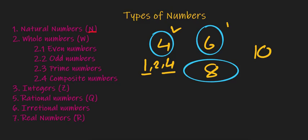6 is also divided by 1, 3 and 6, so this is a composite number. 10 is a composite number. 8 is also a composite number.